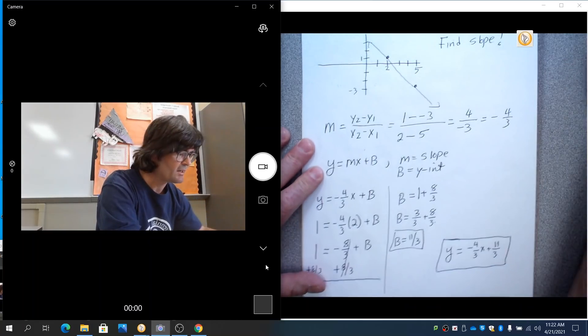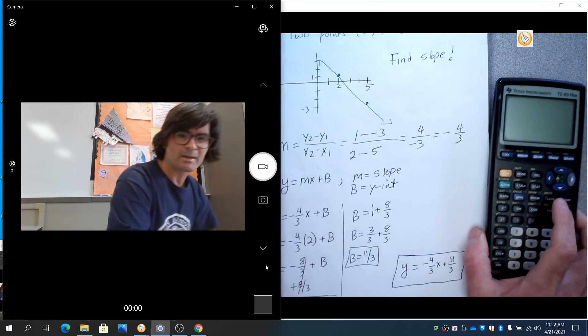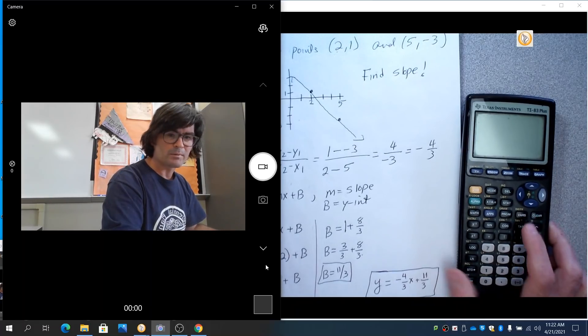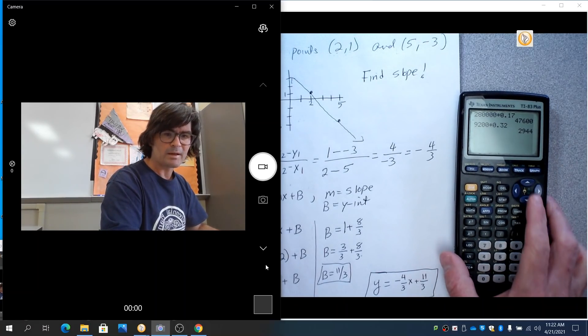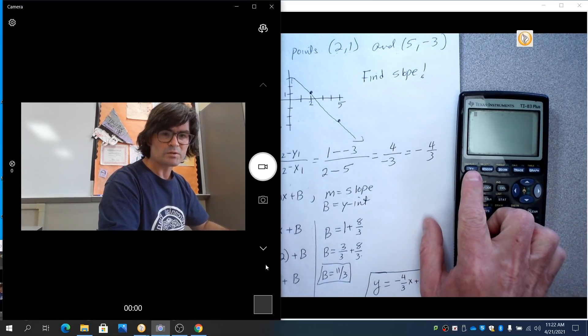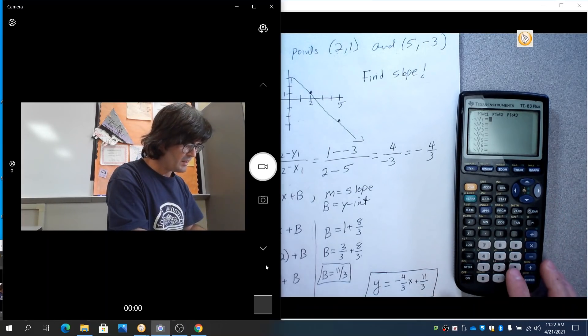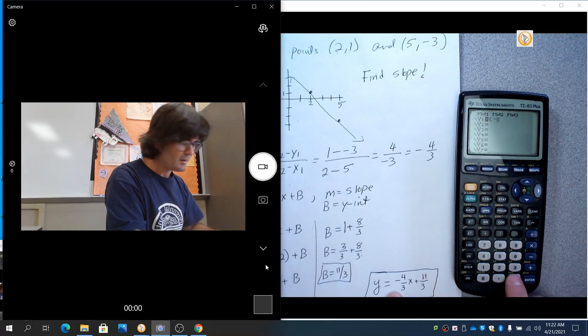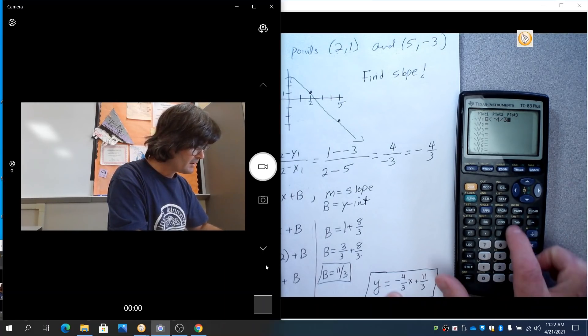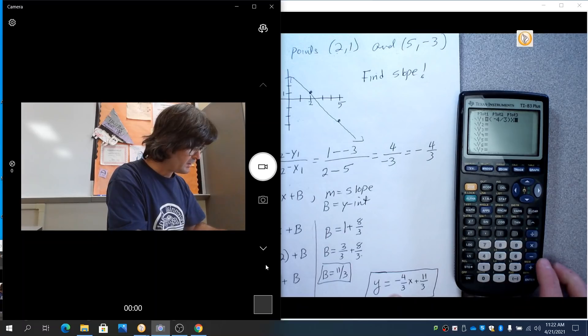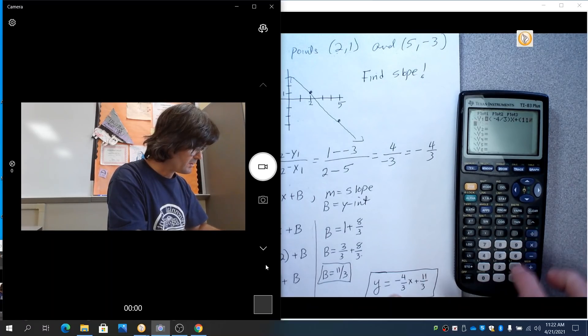Last thing I want to do is check it. I want to check it by graphing it in my calculator. I'm going to turn it on, clear out what I had, go to Y equals right here. And we're just going to clear out whatever is in there. Type in this. So I'll do parentheses, the negative, negative 4 thirds, and then X, and then plus, I'm going to do plus 11 thirds.